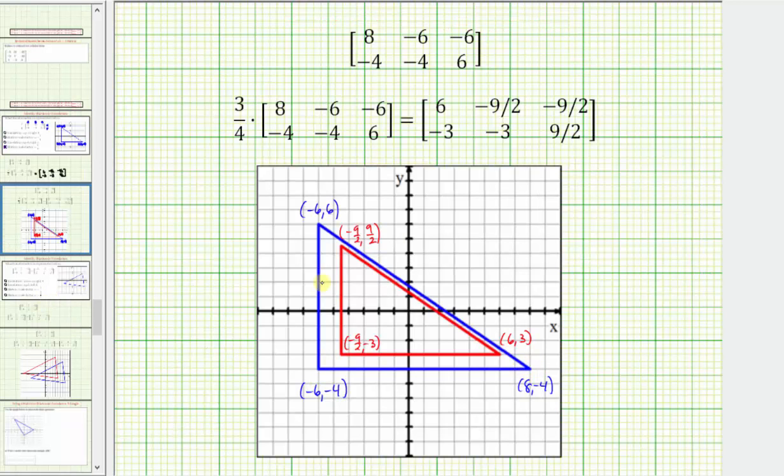So the blue triangle is the original triangle, and the red triangle is the dilation with a scale factor of three-fourths. Notice how we have the same shape, but the red triangle is smaller by a factor of three-fourths.